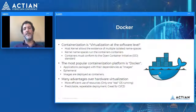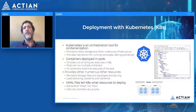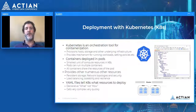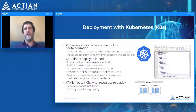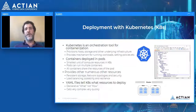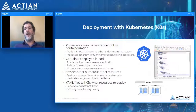Now that we have our images, how do we deploy them? For this we use Kubernetes, which can be seen as an orchestration tool for containerization. It provisions the underlying ecosystem for containers to run in, taking care of hosts, storage, network infrastructure, and anything else the containers need. It also provides a mechanism for running these workloads, setting permissions policies, managing sensitive information, and pretty much everything else the application needs to run successfully.